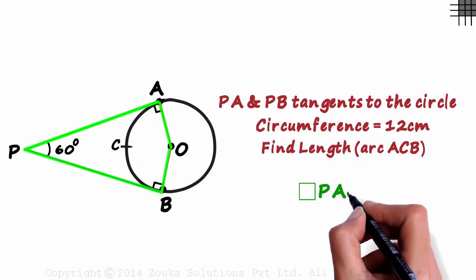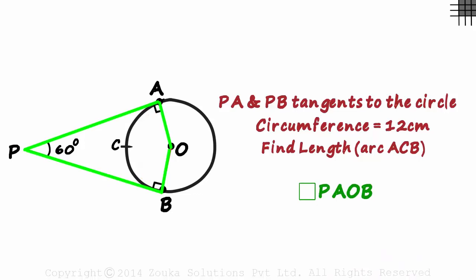Now look at quadrilateral PAOB, this kite-like quadrilateral. Out of the four angles, three are known to us and we can easily find the fourth one.